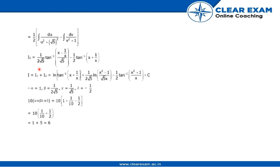The overall integral I = I1 + I2. Adding all three terms, we identify alpha = 1, beta = 1/√2, gamma = √5, delta = −1/2. Substituting these into 10(alpha + beta·gamma + delta) gives 10(1 + (1/√2)·√5 + (−1/2))... which simplifies to 1 + 5 = 6. The answer is 6.